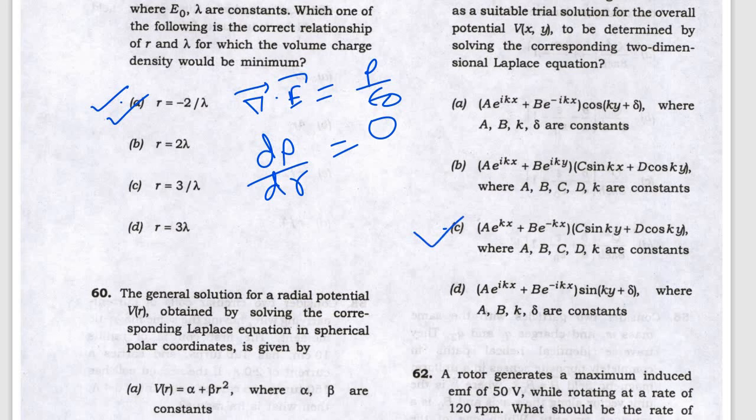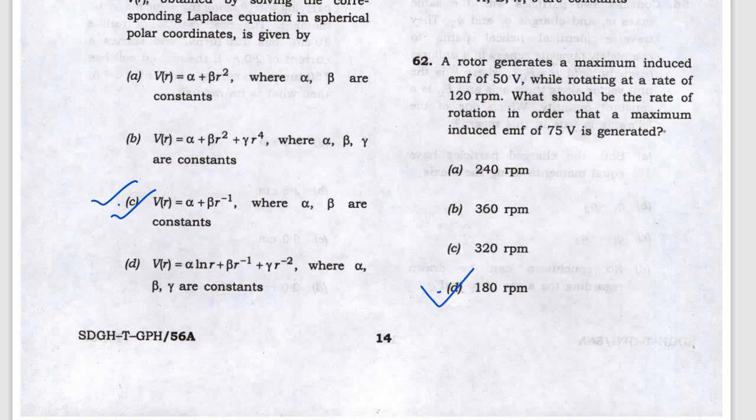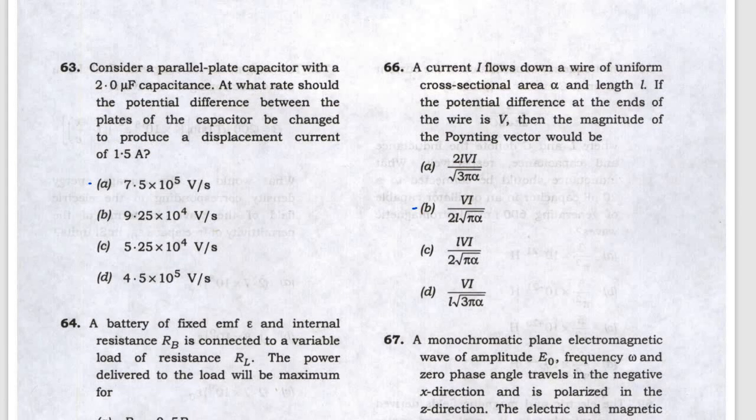The rotor generates the maximum EMF when the RPM is 120 and 75 volt, so the answer is D, 180 RPM. Next is the capacitance problem, and the displacement current will be answer A.